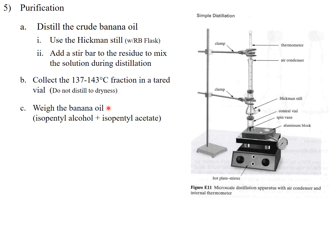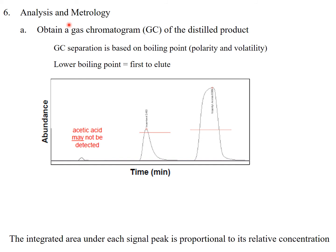After we're done distilling, we're going to weigh the banana oil, which contains some isopentyl alcohol starting material and our product isopentyl acetate. We're then going to analyze our product by obtaining a gas chromatogram—GC analysis. GC separation is based on boiling point, polarity, and volatility. The first peak that comes off will be isopentyl acetate because it has a lower boiling point than isopentyl alcohol, which can hydrogen bond. If we didn't wash our product thoroughly enough, we might even see some acetic acid. Integrating the area underneath each peak is proportional to its relative concentration, and we can use that to calculate the percent composition of our product.